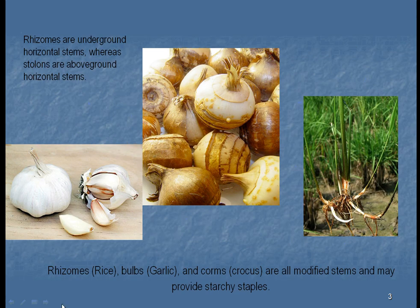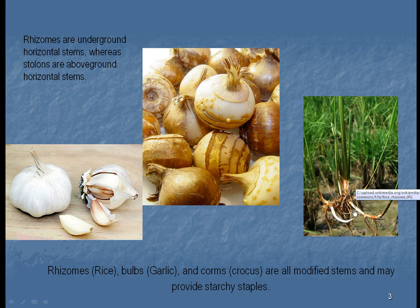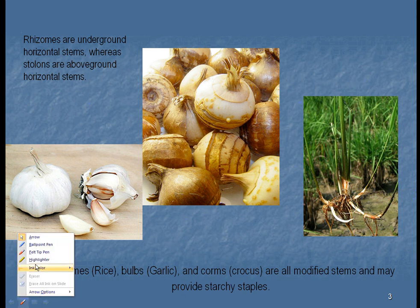Common ways that plants store starch are with things called rhizomes, bulbs, and corms. For example, in rice, you can see little projections coming out just beneath the ground — these are called rhizomes. Besides storing food, they allow the plant to expand itself and grow into other areas.